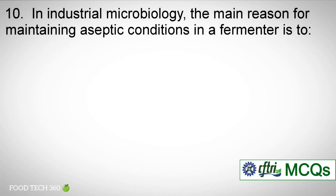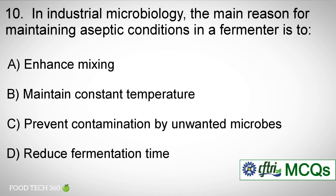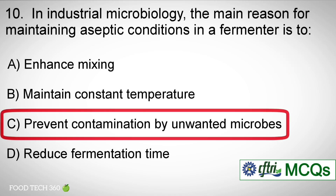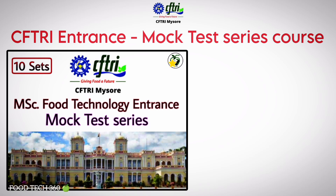Question number 10. In industrial microbiology, the main reason for maintaining aseptic conditions in a fermenter is to: Options: A. Enhance mixing, B. Maintain constant temperature, C. Prevent contamination by unwanted microbes, D. Reduce fermentation time. Correct answer: C. Prevent contamination by unwanted microbes.